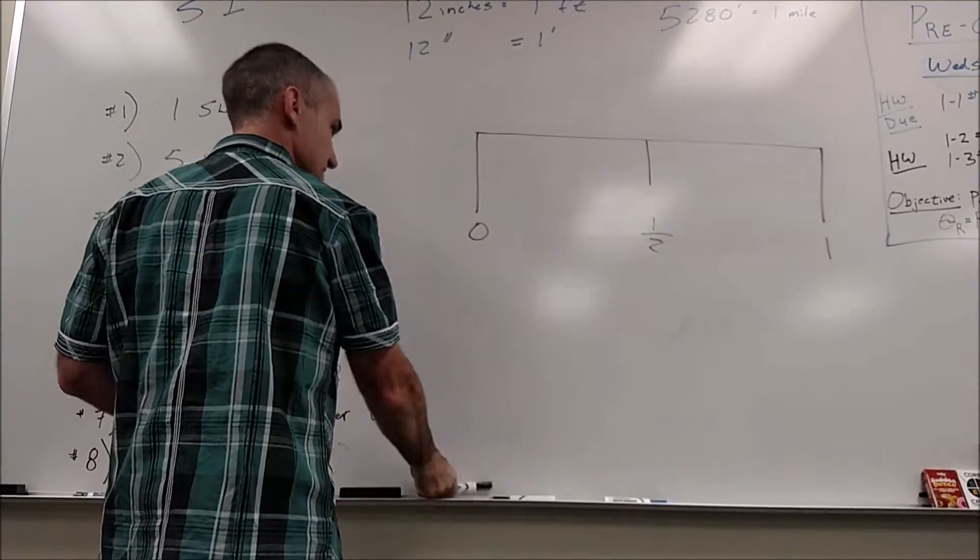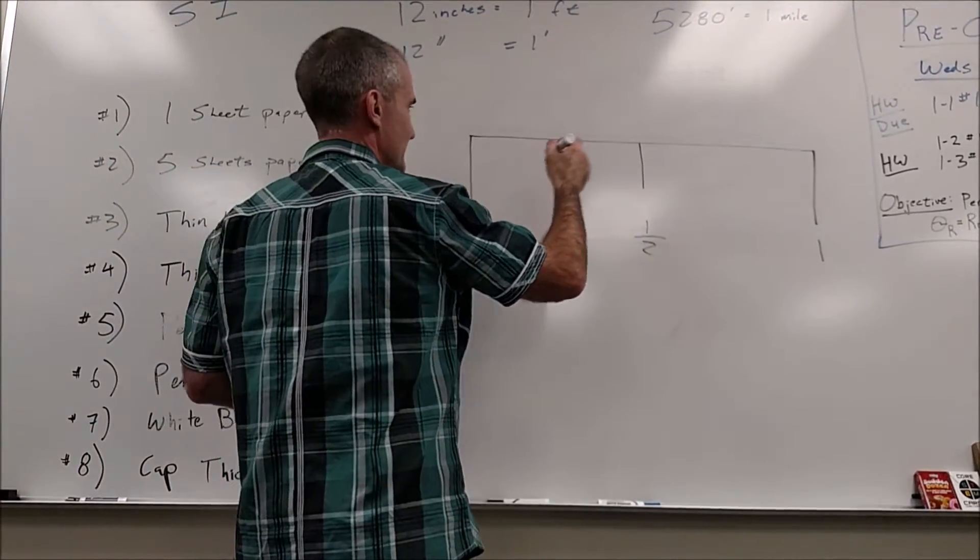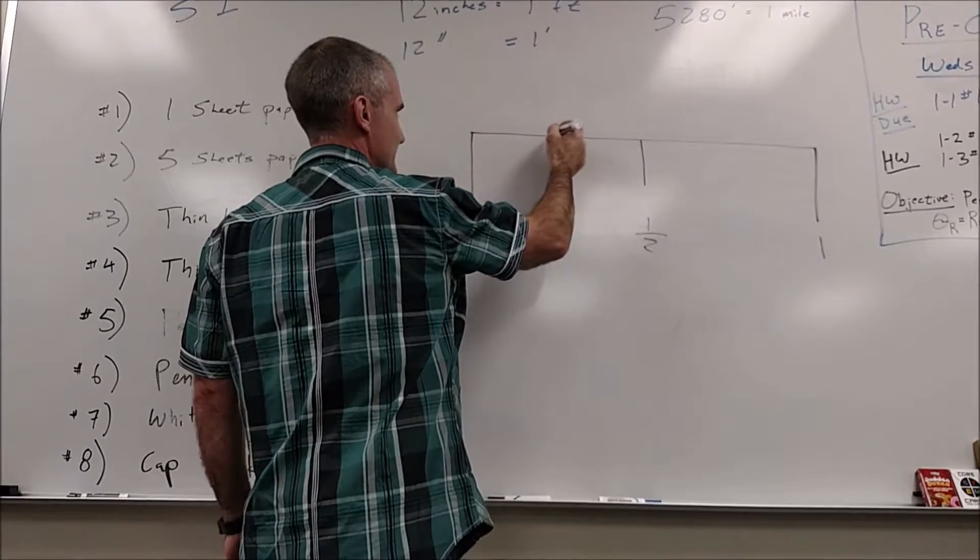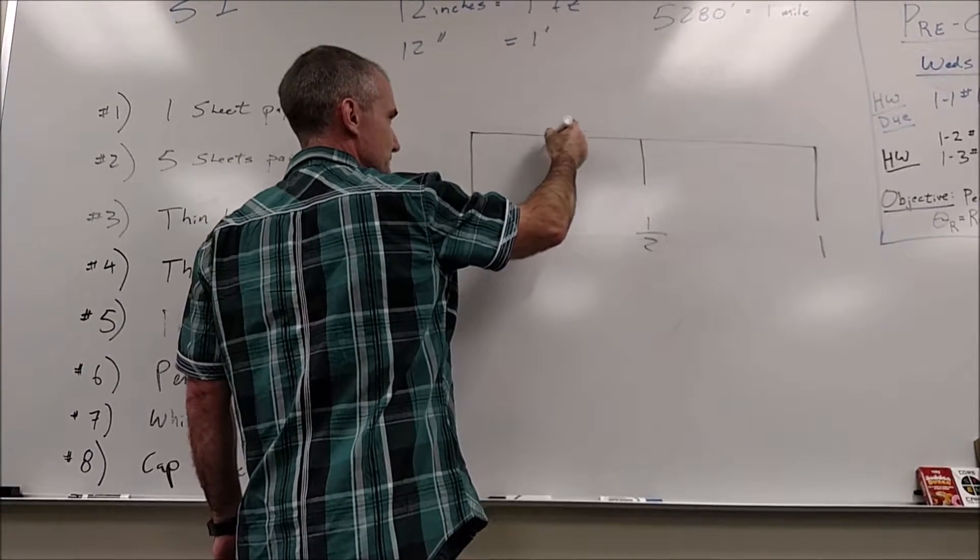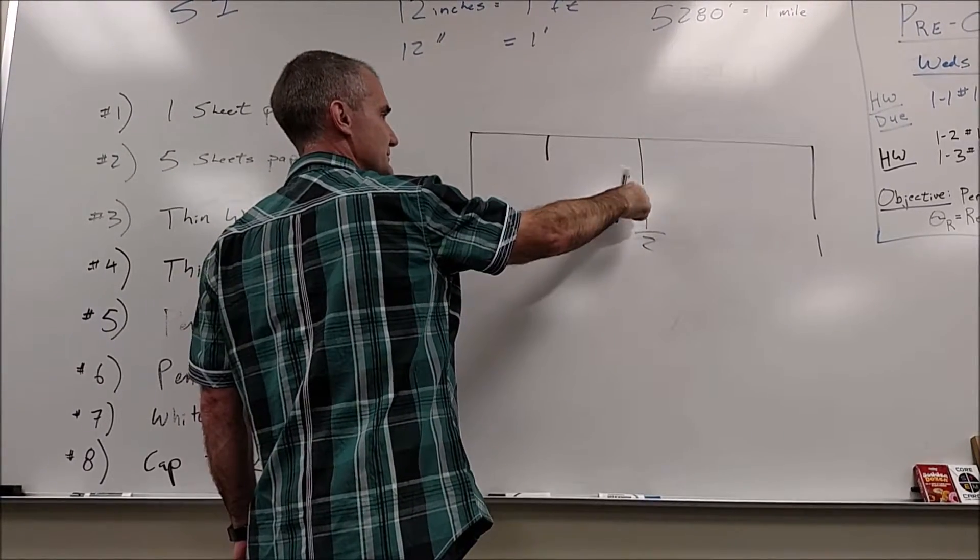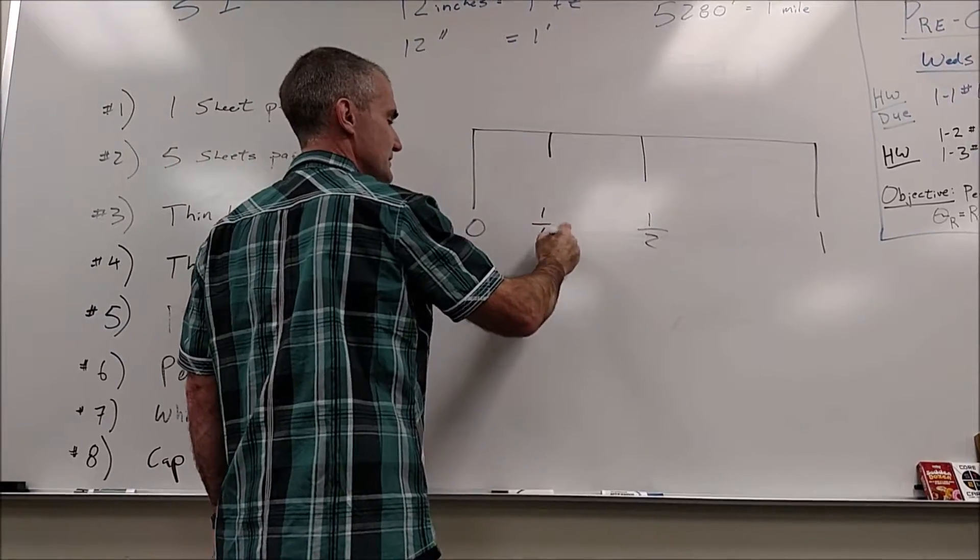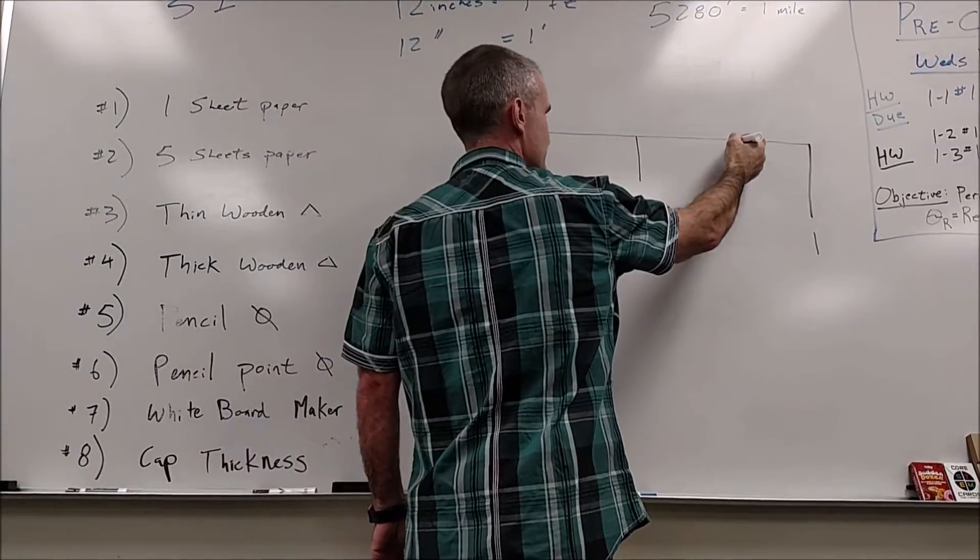Then I cut that in half. Tyler, what's half of that? One fourth. That tick line is a little bit shorter, so that's one fourth, two fourths. Jake, what's this one? Three fourths, and then four fourths.